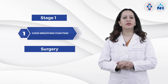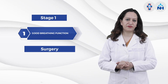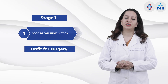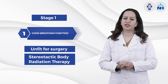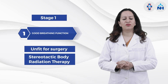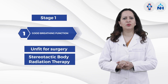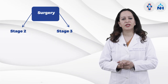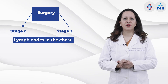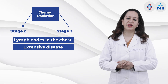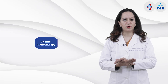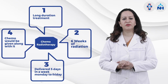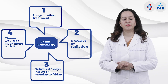For stage one, the majority of patients with good breathing function can undergo surgery. Sometimes additional chemotherapy may be required after surgery, but mostly surgery alone is sufficient. For elderly patients not fit for surgery, a targeted radiation called Stereotactic Body Radiation Therapy (SABR or SBRT) is used — a very high-dose, precise, localized radiation delivered over three to ten days. For stage two and three, it is usually surgery, or chemo-radiation if there are multiple fixed lymph nodes and extensive disease — six weeks of radiation Monday to Friday, with weekly chemotherapy.